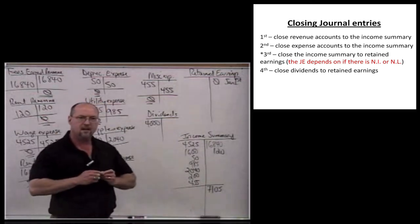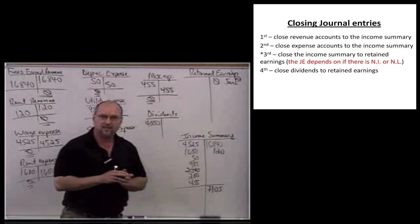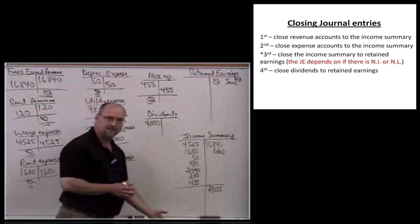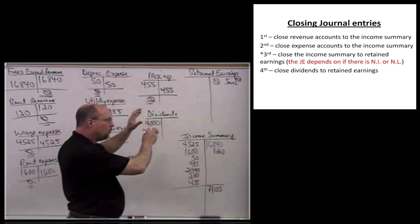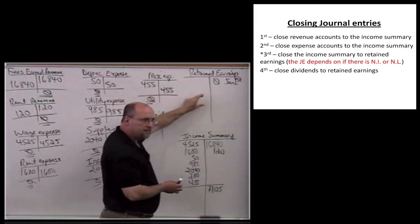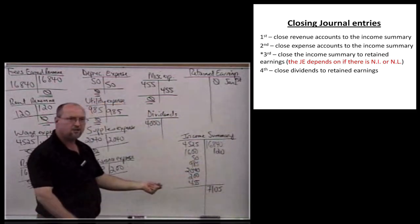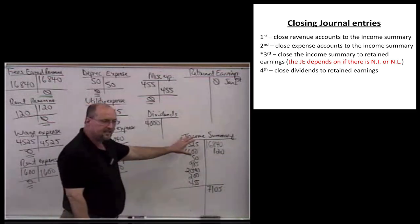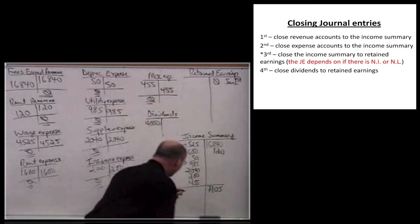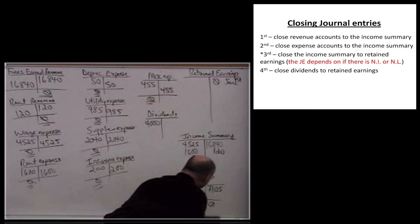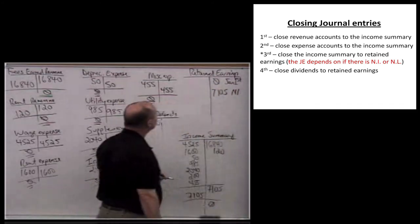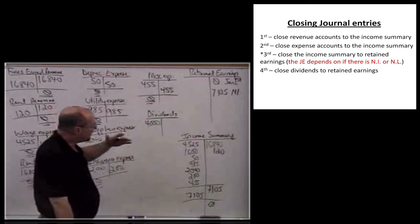Sometimes people ask if you could go straight to retained earnings instead of using the income summary. The answer is yes, but retained earnings would get very cluttered with dozens of revenue accounts and hundreds of expense accounts. It's more desirable from an analysis standpoint to simply see: here's what we began with, here's our net income or net loss, we paid a dividend, here's ending balance. So we put all the detail in the income summary. Now that we know $7,105 is our net income, I close out the income summary by debiting it $7,105 and crediting retained earnings $7,105 — labeled net income. That's its final resting spot. Net income has finally made its way into retained earnings.